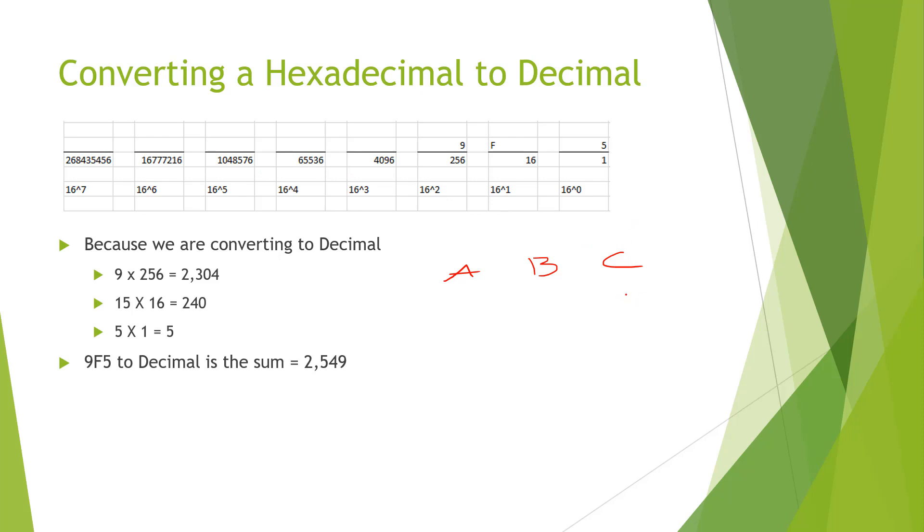C is in the 1 position, so we would do A is 10, B is 11, C is 12. So 12 times 1, 11 times 16, 10 times 256. And you would just do the appropriate math.